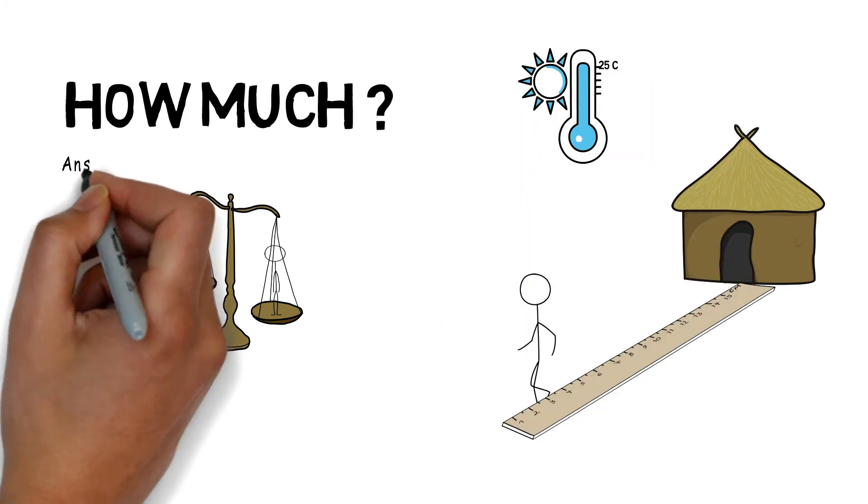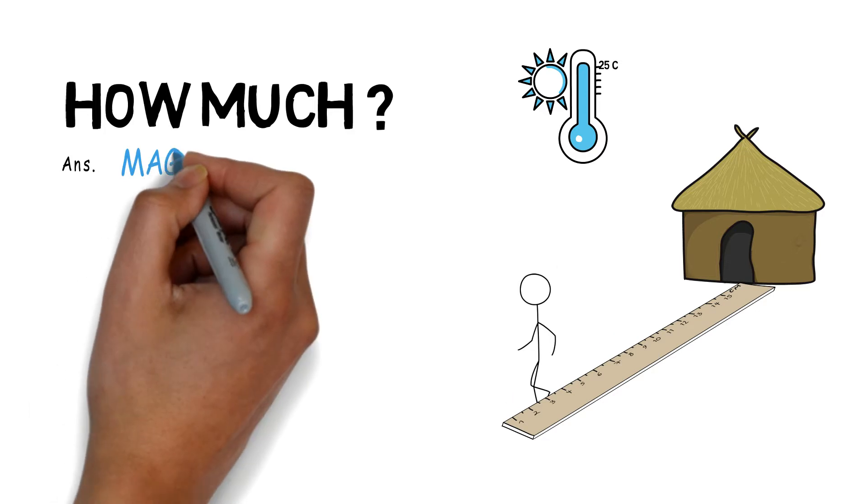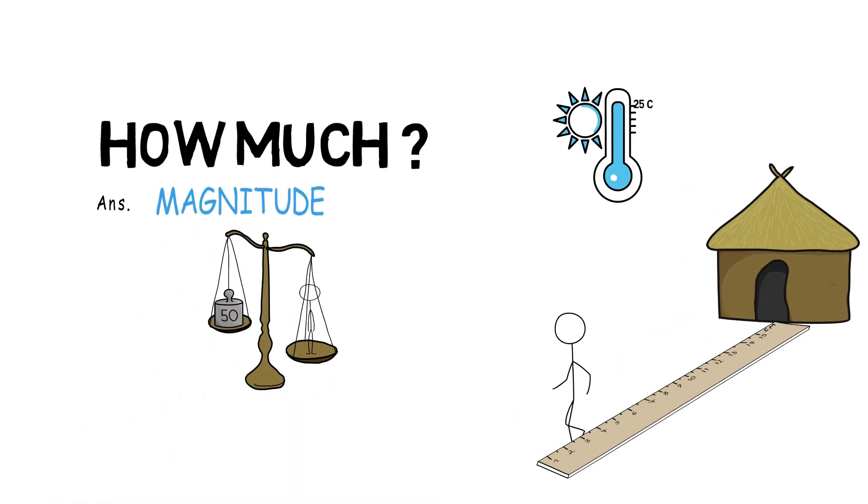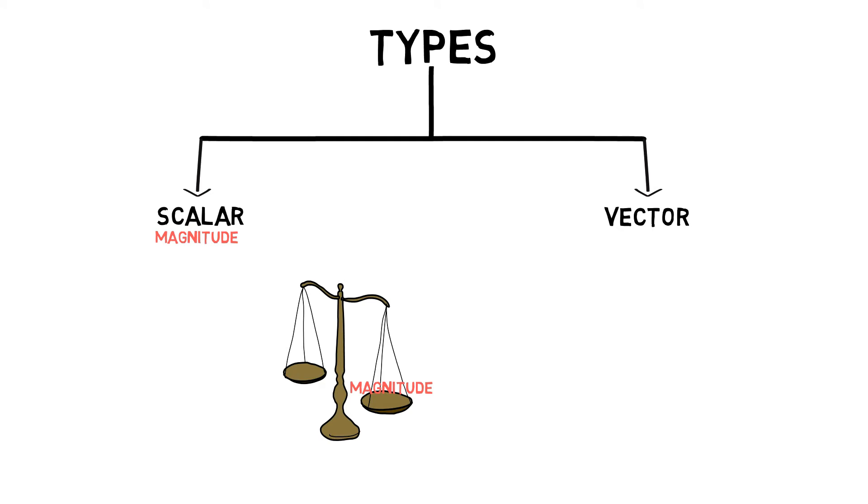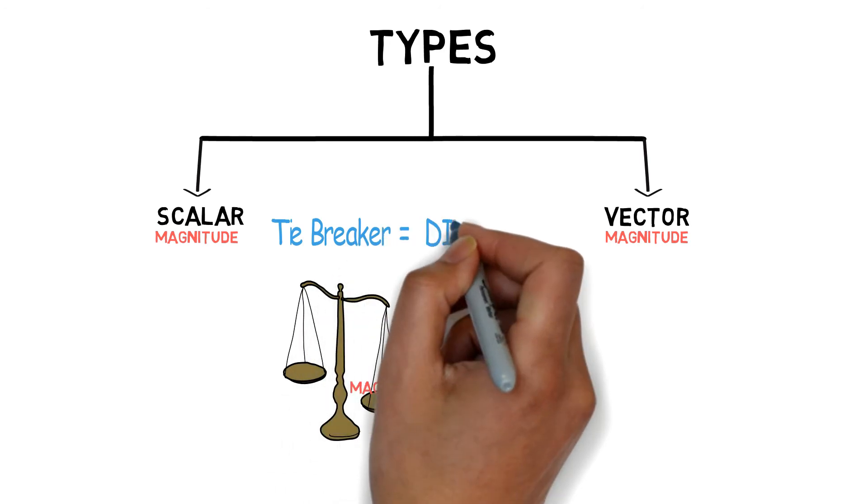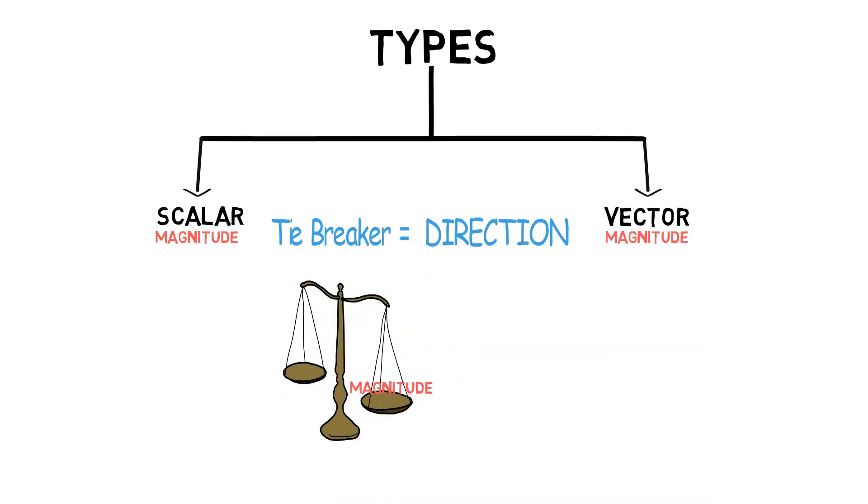The answer that you get which helps you determine the size, extent, or such factors is known as magnitude. Every quantity that we know requires magnitude to explain themselves. So, the quantity solely depends upon the second important term, direction, which will decide whether the quantity is scalar or vector.